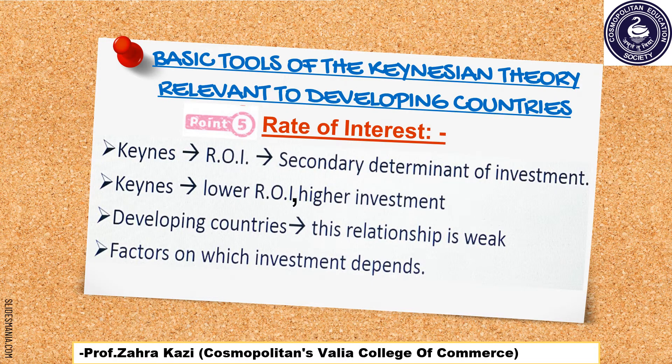Point number 5 is Rate of Interest. According to Keynes, Rate of Interest is regarded as a Secondary Determinant of Investment. As per Keynes, lower the Rate of Interest, higher will be the Level of Investment. But in developing nations, this relationship between Rate of Interest and Level of Investment is very weak. Factors on which investment depends are Market Uncertainties and Government Policies, rather than the Rate of Interest.